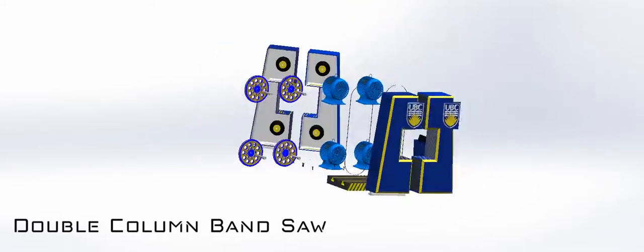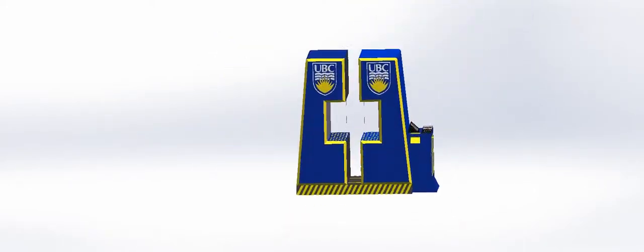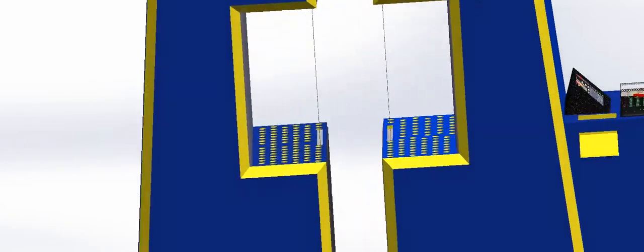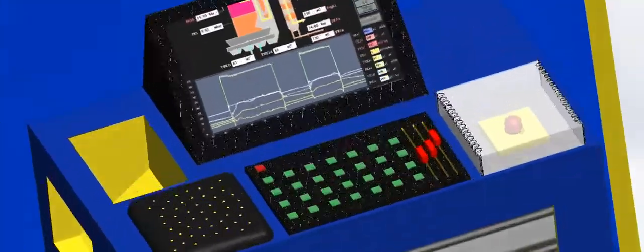This is the double column bandsaw featuring an operating table and four electric motors, sporting the blue and yellow UBC colors. The double column band design allows for up to two logs to be cut at once along their center line.